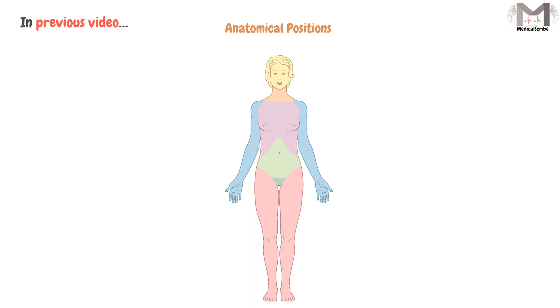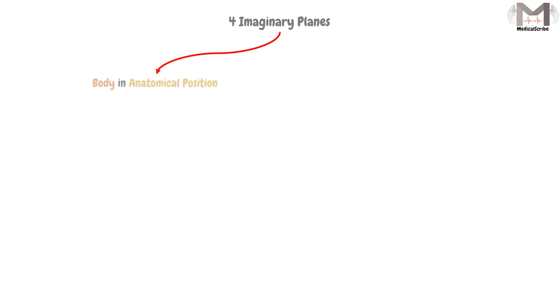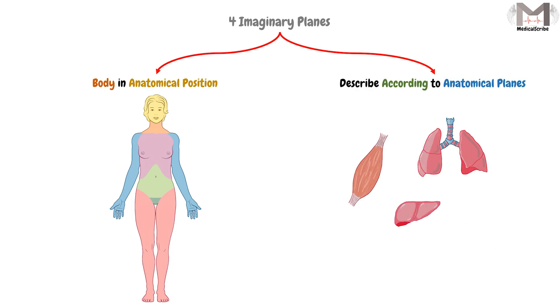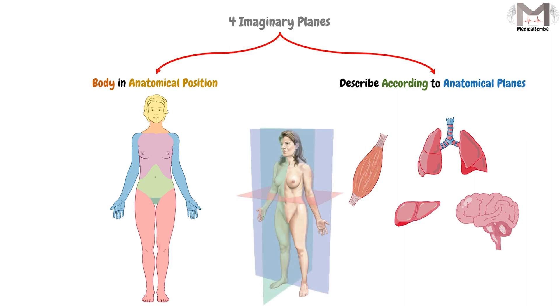Today we should know another important thing, which is that we will describe the anatomical structures according to 4 imaginary planes. When we have to describe a specific structure, firstly, the body must be in the anatomical position. Then, we have to describe the structure according to these anatomical planes.